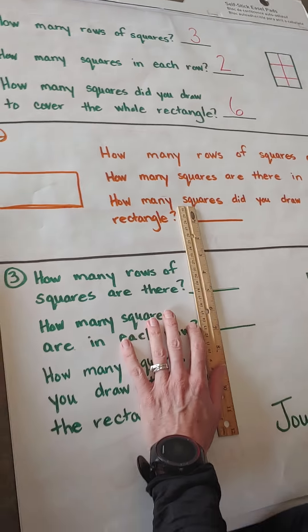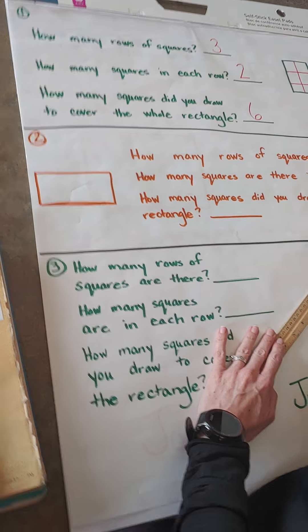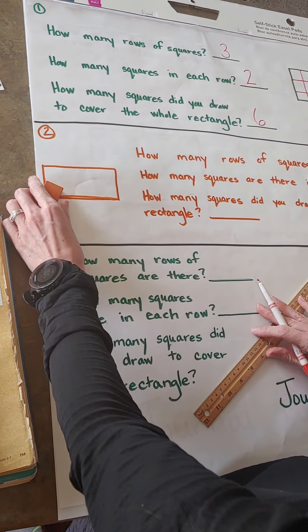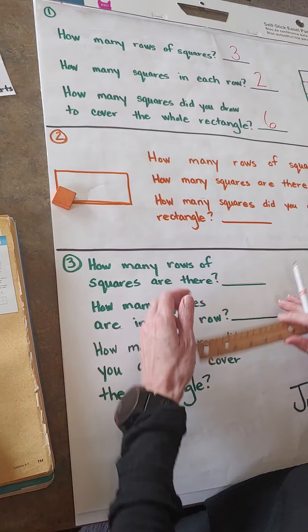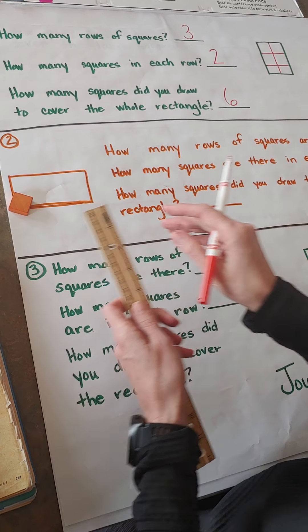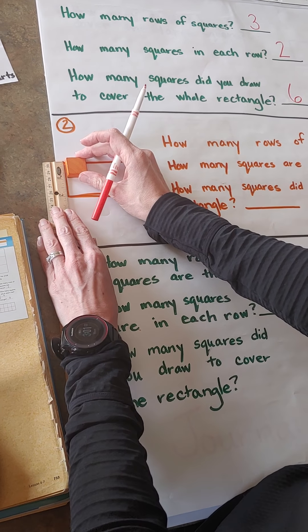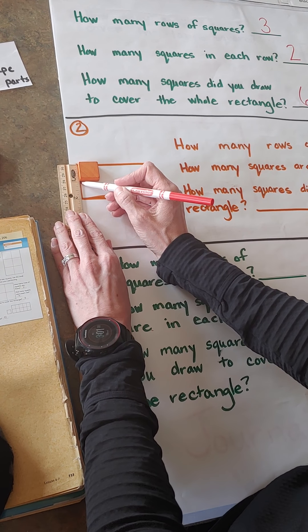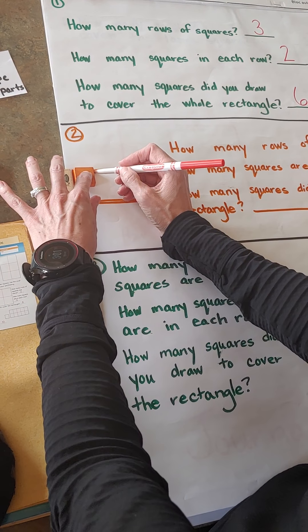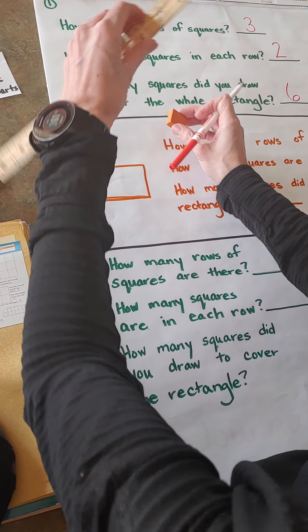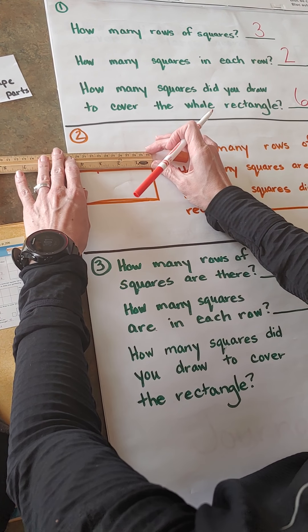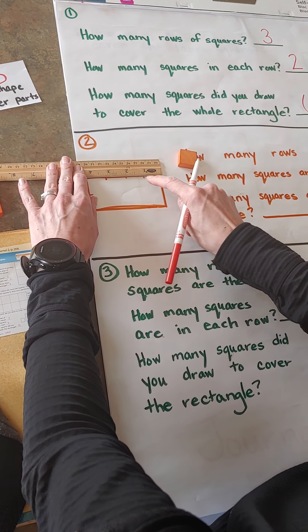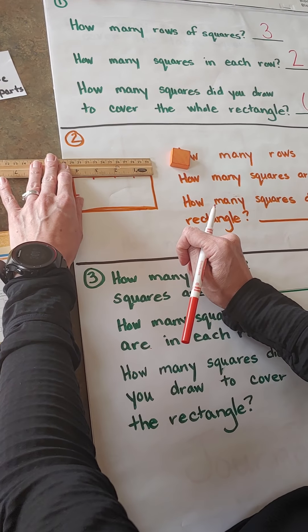We got six squares there. Now on question two, how many rows of squares are there? Again, we're going to be talking about my orange square, so at home I'm going to use my ruler and the one inch. So I'm going to go down and draw my line here, kind of a dash, and I'm going to do it on this side too. For you at home it might look something like this — dash, dash, dash on the one, two, three inch mark.